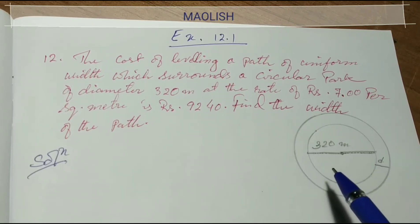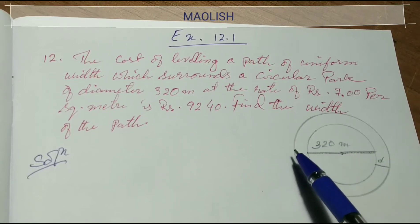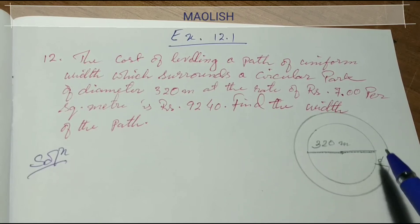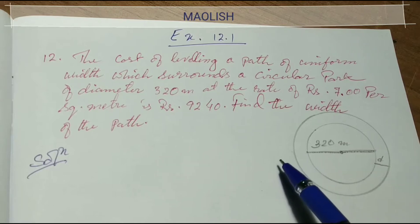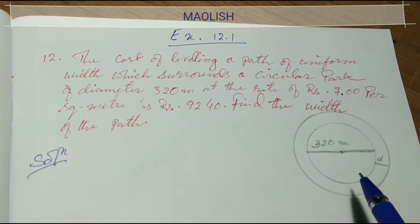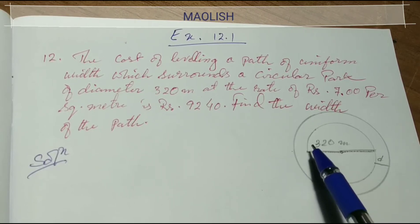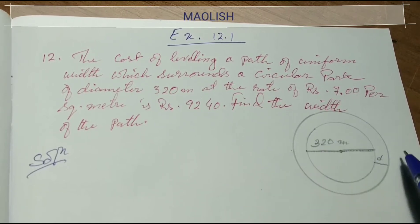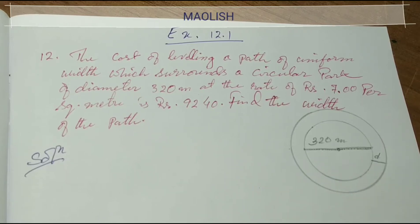The park is in a circular form — a circle-shaped park. Around the park there is a path of uniform width at a certain distance from the park on all sides. The diameter of the park is 320 meters. The cost of leveling the path is Rs. 7 per square meter, and the total cost is Rs. 9,240. We need to find the width of the path. Let's all solve together.